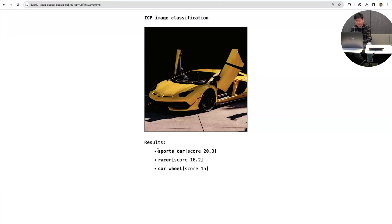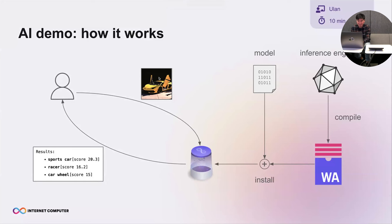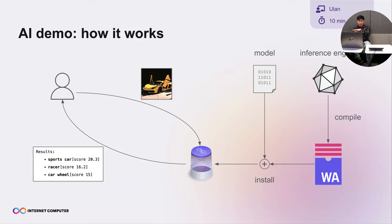We now have the results — the top three labels returned from the model along with their scores. When I sent this image to the canister, the canister ran this image classification. It is implemented with two components: the first is the inference engine — an existing open-source engine we compiled to WebAssembly; the second is the actual model itself, trained to recognize images, also taken from an open-source project. When the canister receives the image, it calls the inference engine to process it and returns the results.